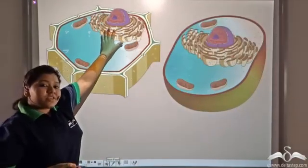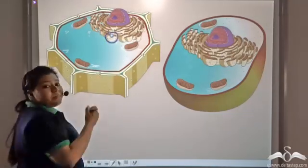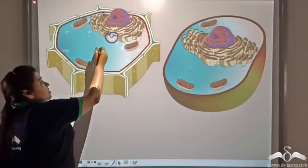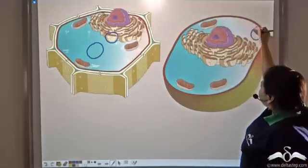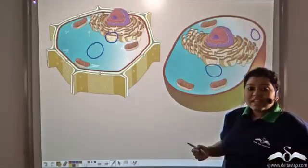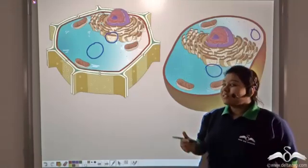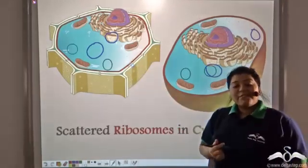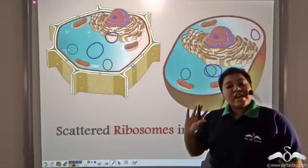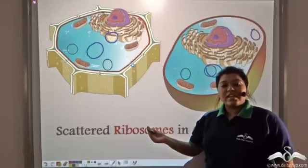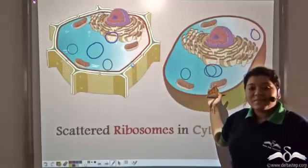The bead-like structures or ribosomes are attached on the endoplasmic reticulum. But there are also structures scattered freely in the cytoplasm — these are also bead-like and are also known as ribosomes. So ribosomes can be bound to the endoplasmic reticulum or they can stay scattered in the cytoplasm, in both plant and animal cells.